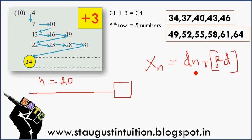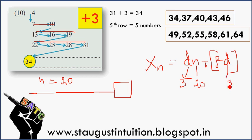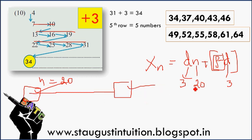We are going to apply n. D is 3. We are going to use d equals 3. Then f equals 1, which is the first term. We are finding the first term and the last term.